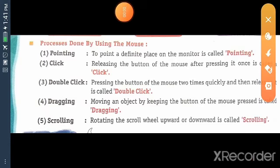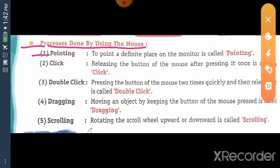Next topic. Processes done by using the mouse. Here, there are five different types of processes done by using the mouse. First, pointing. To point a definite place on the monitor is called pointing.